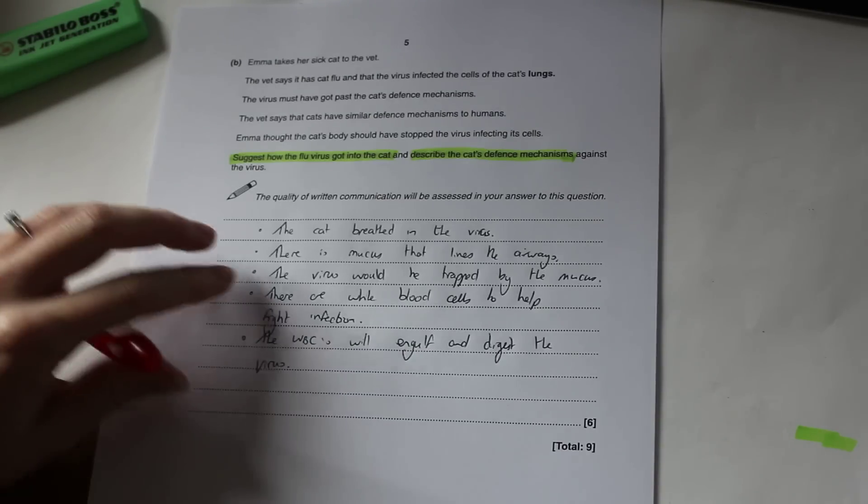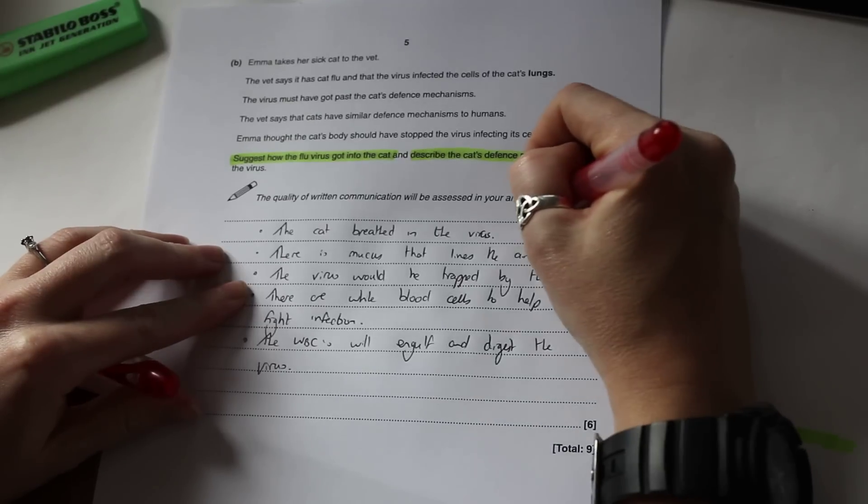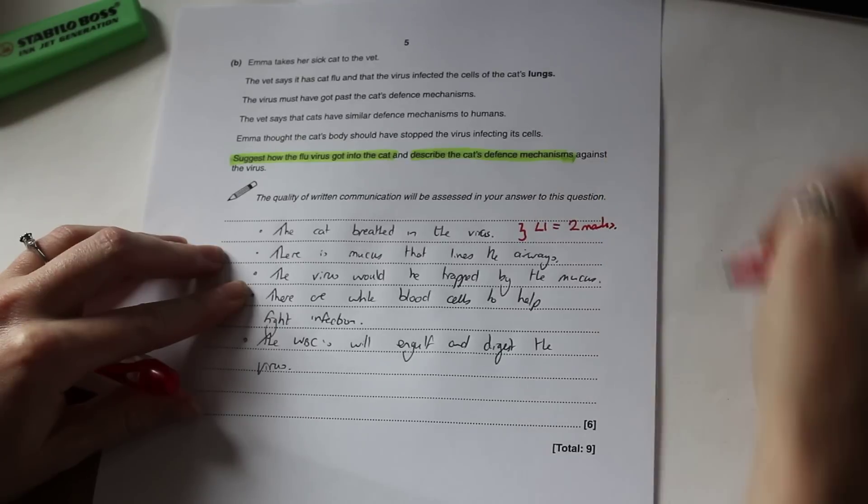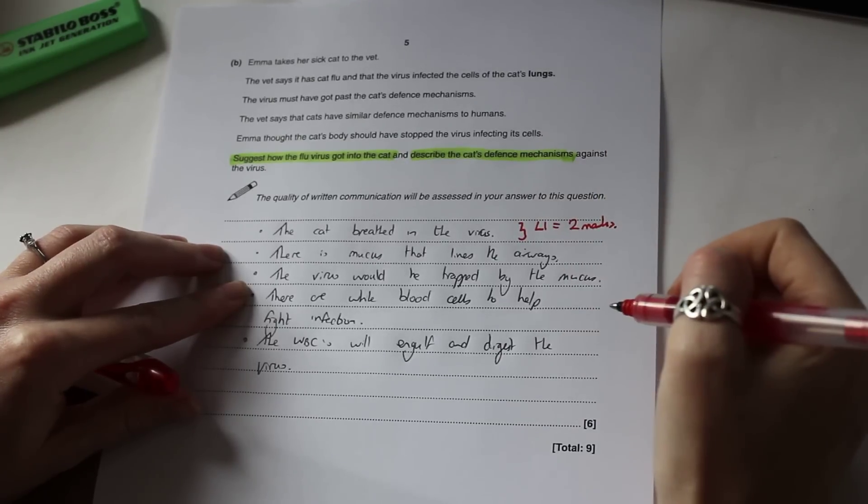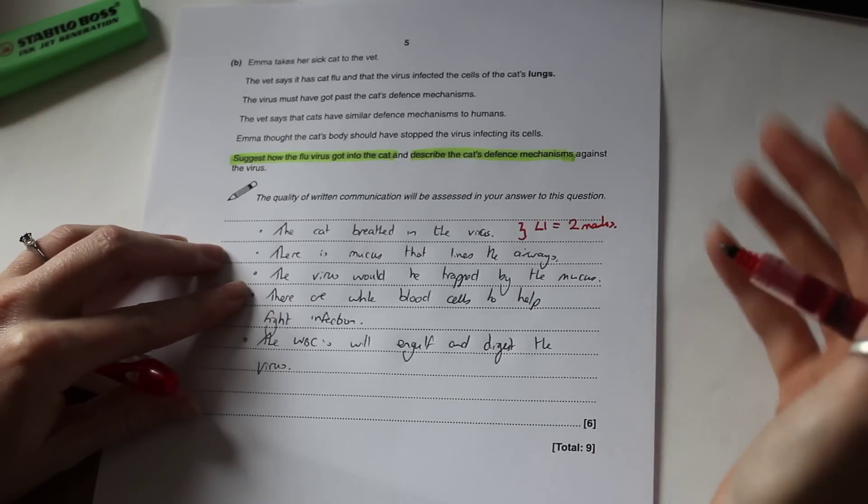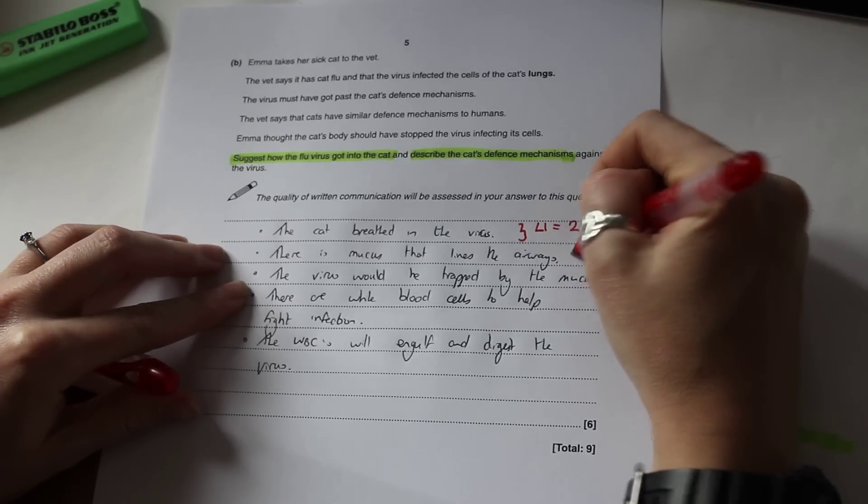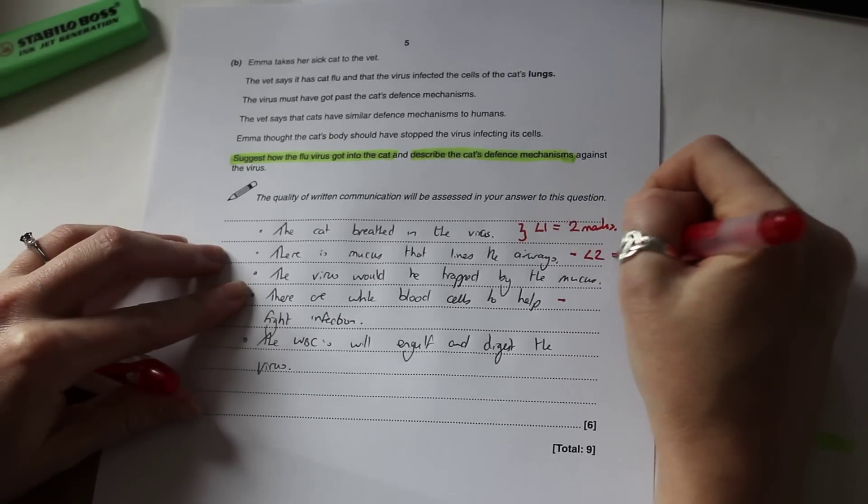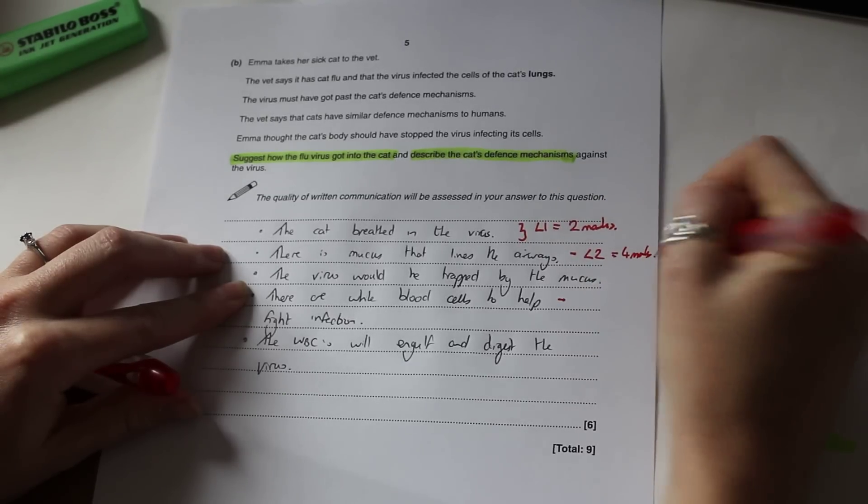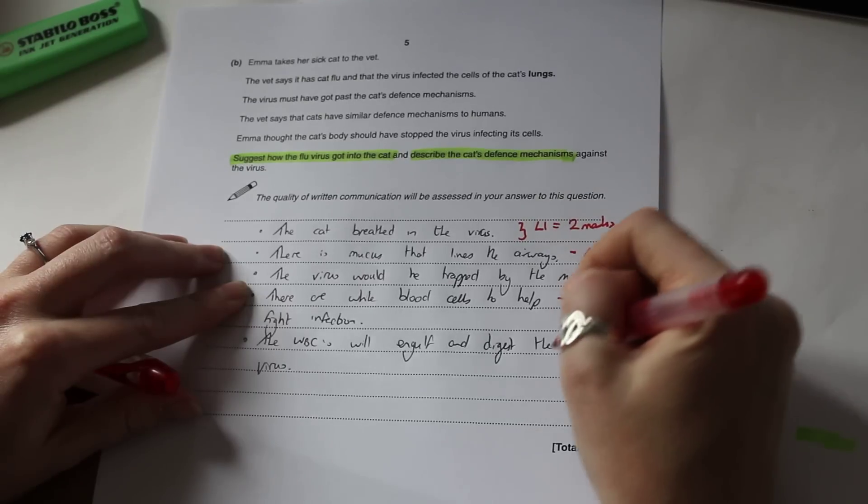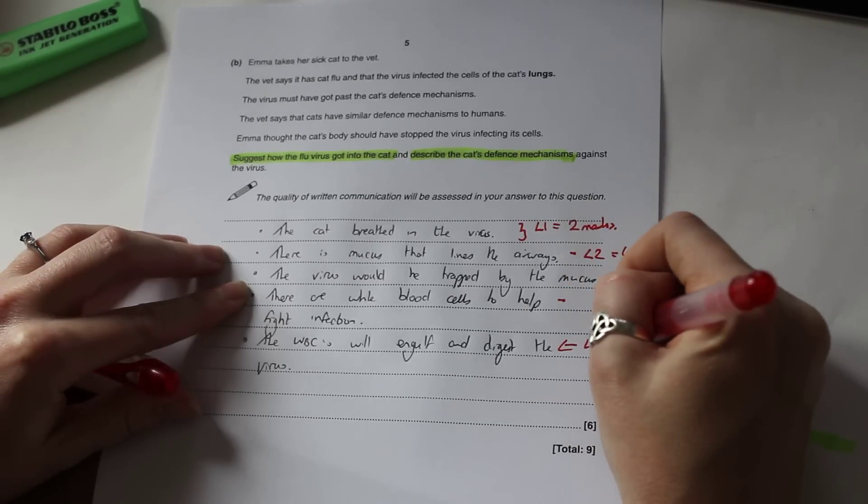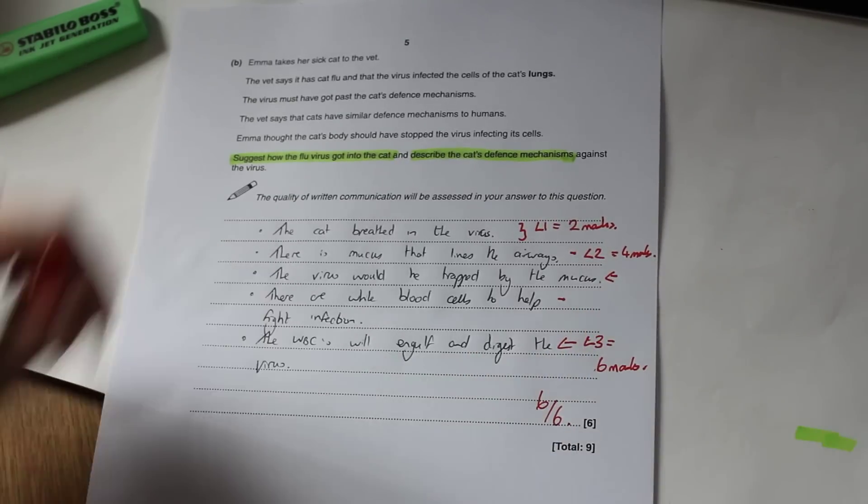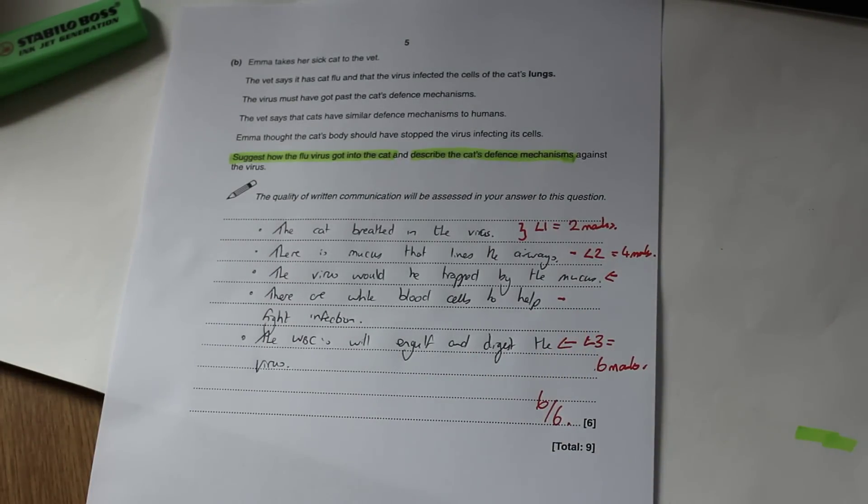So if you were to look at how this is actually marked then, the cat breathed in the virus. That one little sentence there is our level one answer. And that gets you two marks. If you then went on to identify one method by which the cat has a defense mechanism, so either this one or this one here, then they are level two answers. And that's worth four marks to us. And then for explaining it, so this one here and this one here, those are the level three answers, which gives us six marks. So just for those few points, you get six out of six on that question.